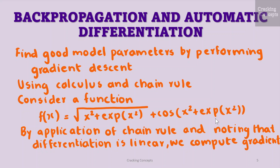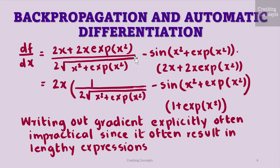Let us consider the function f which is the root of x squared plus exponential of x squared plus cos of x squared plus exponential of x squared. By application of the chain rule and noting that the differentiation is linear, we can compute the gradient as given here. On opening the brackets and rearranging the terms, we will get this as the final expression. Writing out the gradient in this explicit way is often impractical since it often results in a very lengthy expression for a derivative.